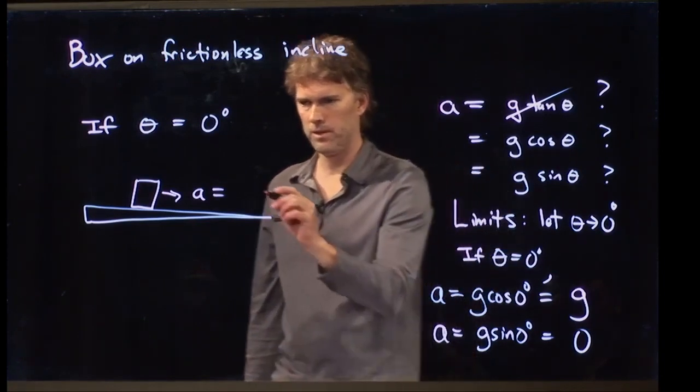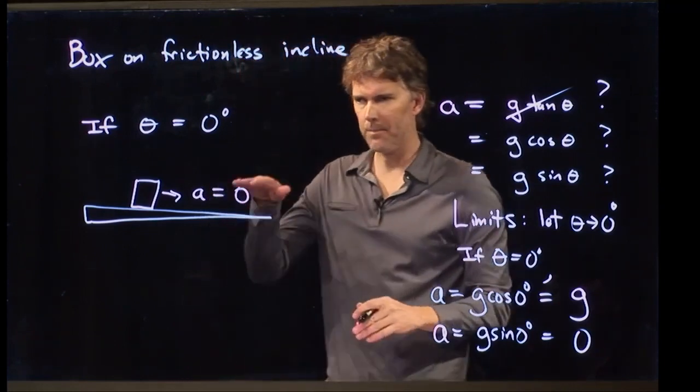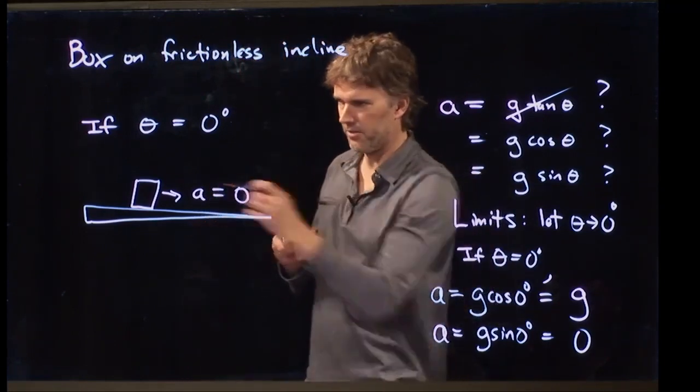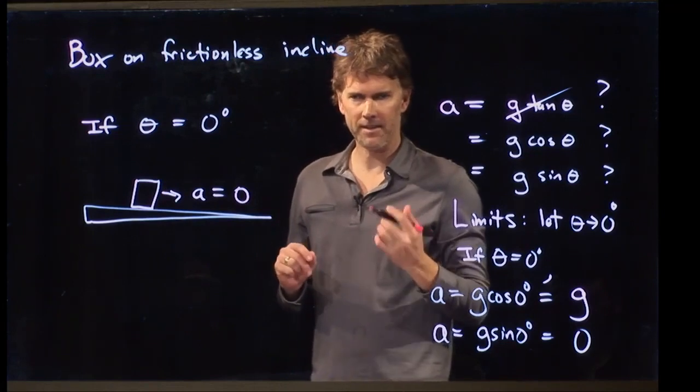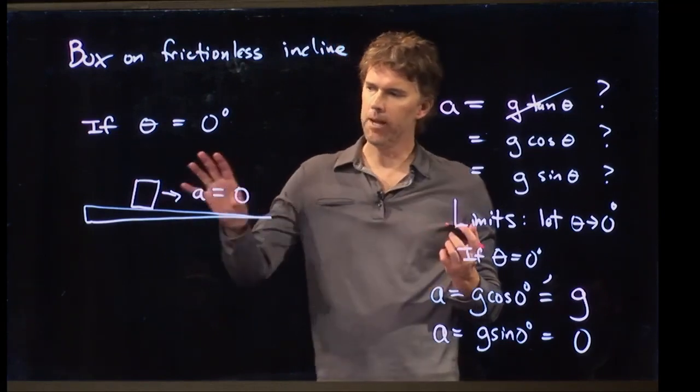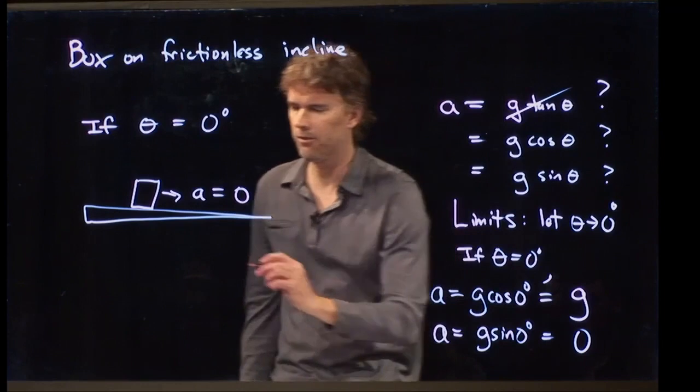What does it have to be? 0. Right? If I put an object on a level surface, it's not going to suddenly rush to the right or to the left. It's got to be 0. And so immediately you know which the answer is.